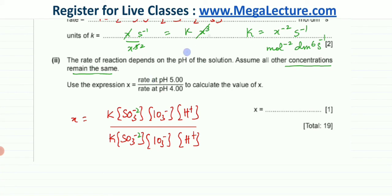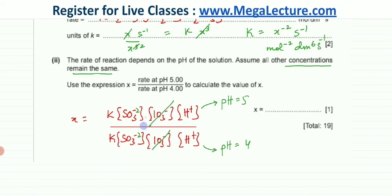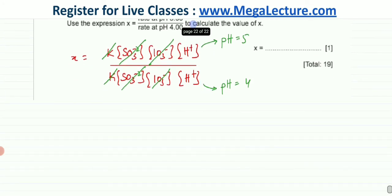We want the rate at pH 5 divided by the rate at pH 4. The only thing changing is the H⁺ concentration. Since all other concentrations remain the same, IO3⁻ and SO3²⁻ cancel out. The rate constant k only depends on temperature, which isn't changing, so it also cancels. Therefore, x = [H⁺] at pH 5 divided by [H⁺] at pH 4.